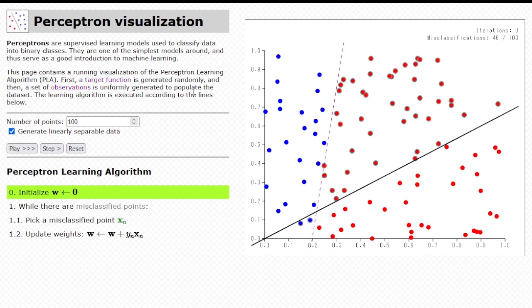So the page is divided into four sections. The first is the description, the second are the controls, the third is the pseudocode, which will be updated in real time, and the fourth is the plot, which is where the action will be happening.